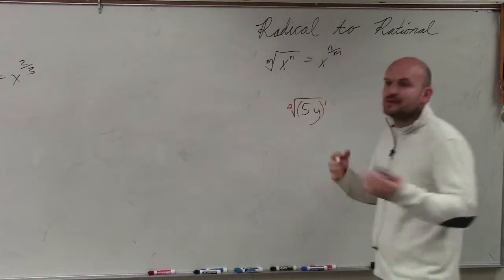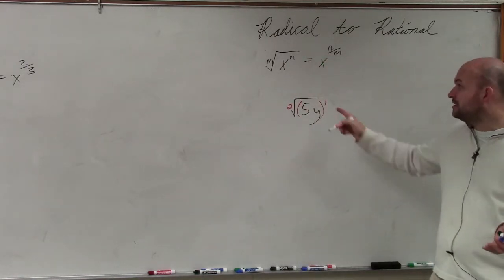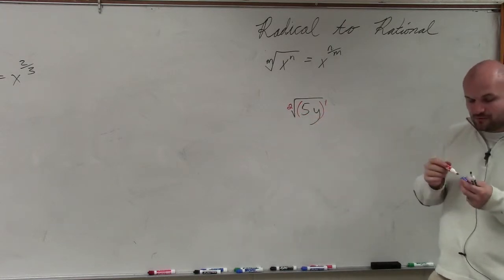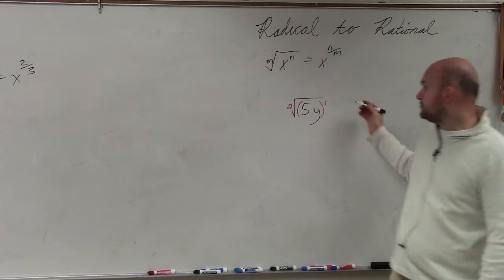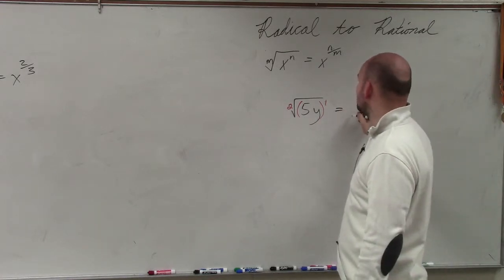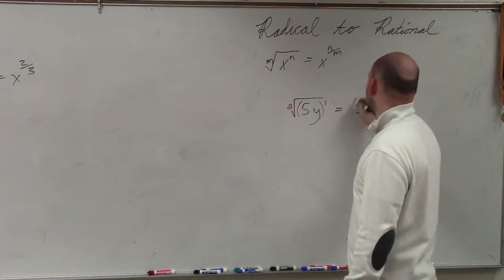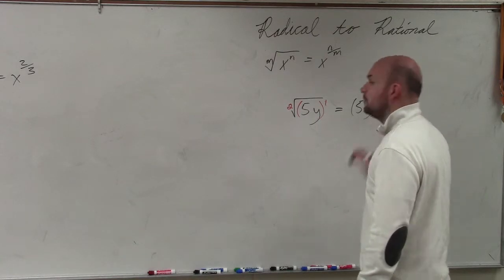It wouldn't be 0, because remember, anything to the 0 power is just going to be 1. So it's really 5y raised to the first power. So therefore, if I was going to rewrite it using this rule, it's simply just going to be 5y raised to the 1 half power.